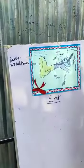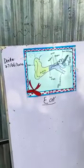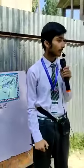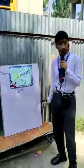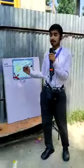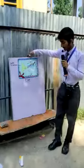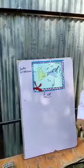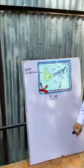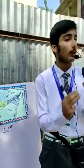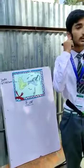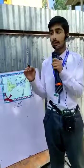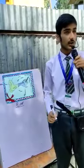First, can anybody tell me what is ear? Ear is a pure sensory organ. We have two ears — this is one ear and this is one ear. Ears are called pure sensory organs.